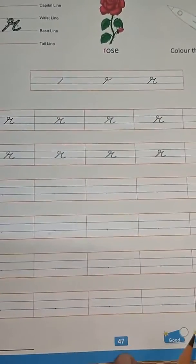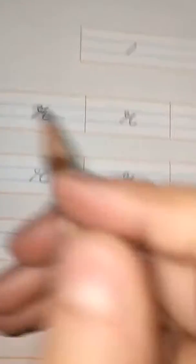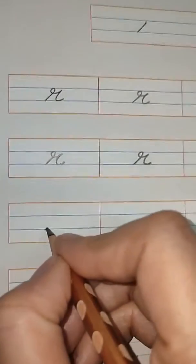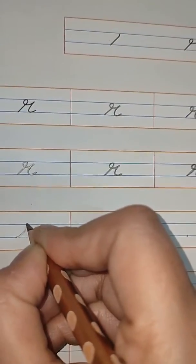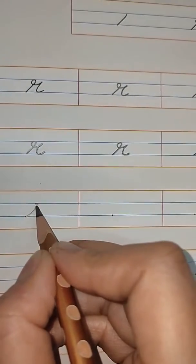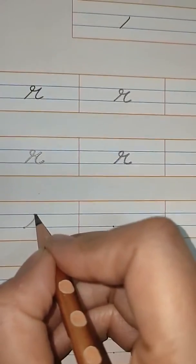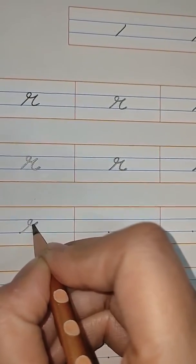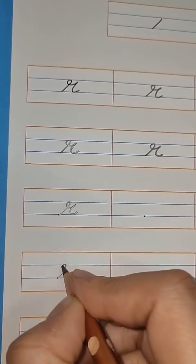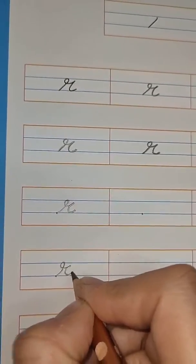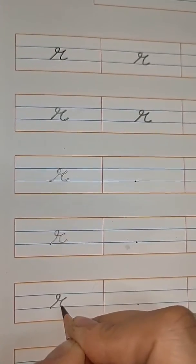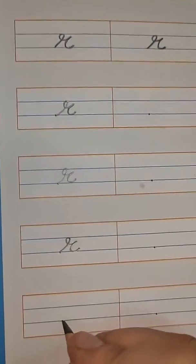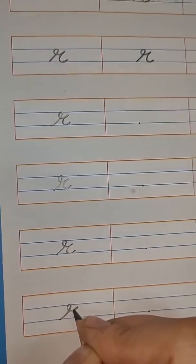Letter R, page number 47. Now we will do the same in dot. Start from the baseline, go up, then move inside, outside, and then the shape of C. Again: up, loop, outside and then C. One more time: up, loop, outside, then C.